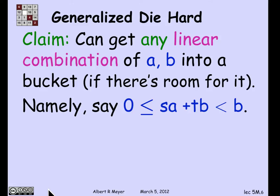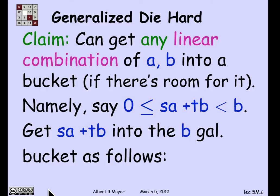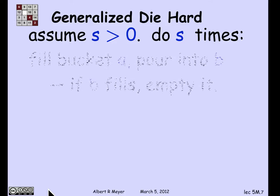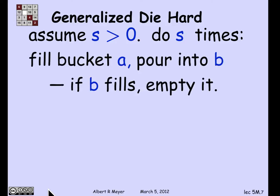Suppose I have a linear combination of A and B — S·A plus T·B — that will fit in bucket B, meaning it's greater than or equal to 0 and less than B. How do I get that amount into bucket B? We can assume S is positive. What we do is repeat the following procedure S times: fill up bucket A and pour it into bucket B. Whenever B gets filled up, dump it empty, and keep filling bucket A and pouring it into B, repeating S times.